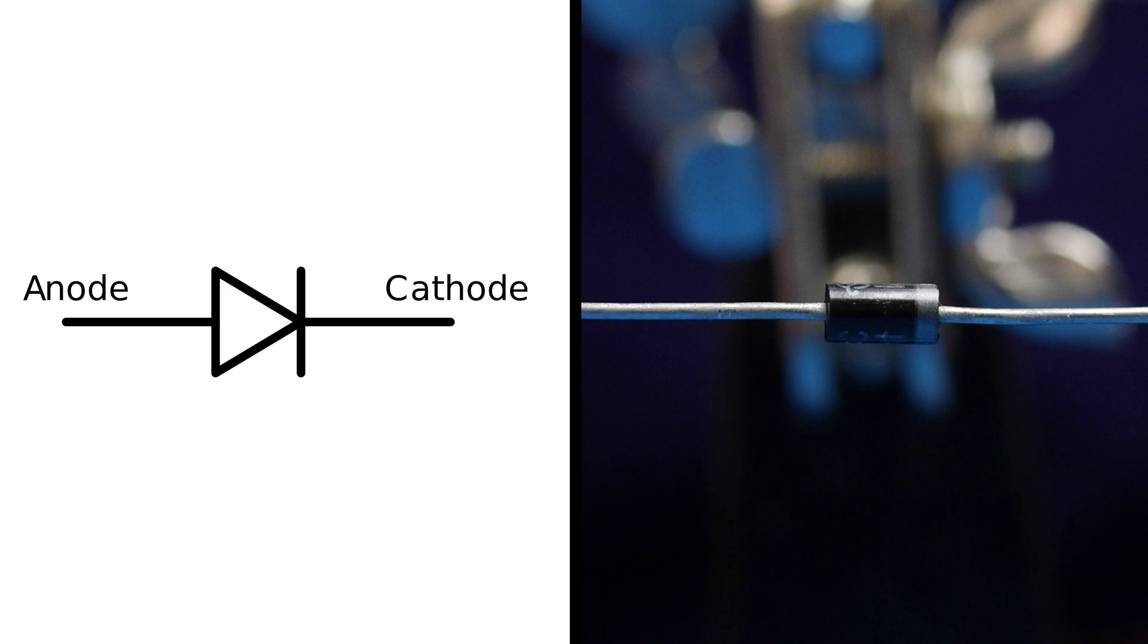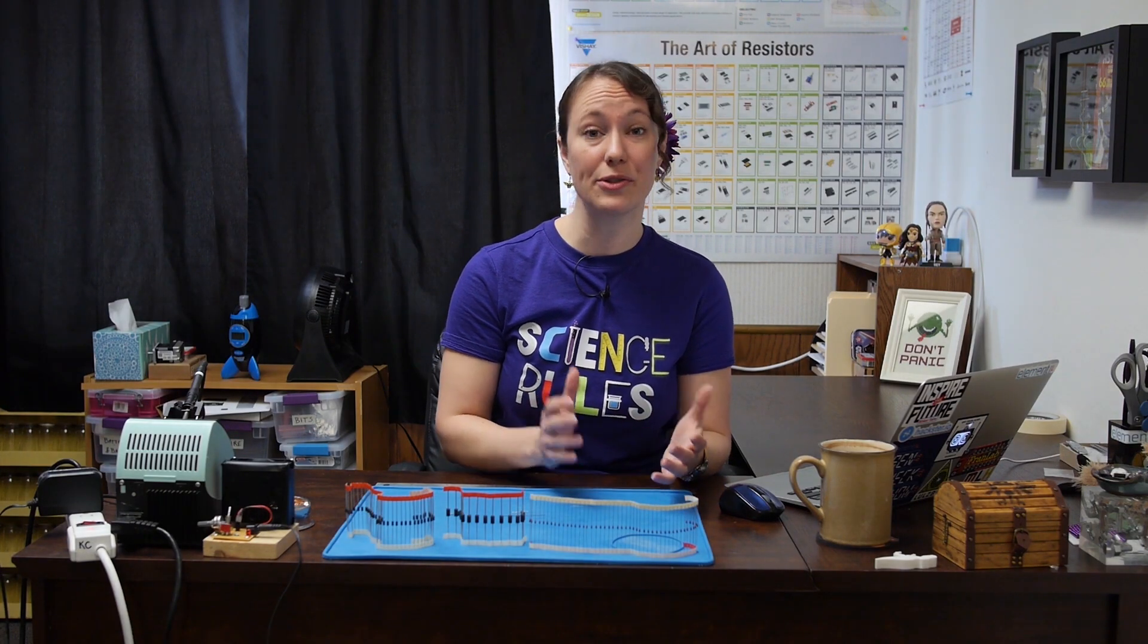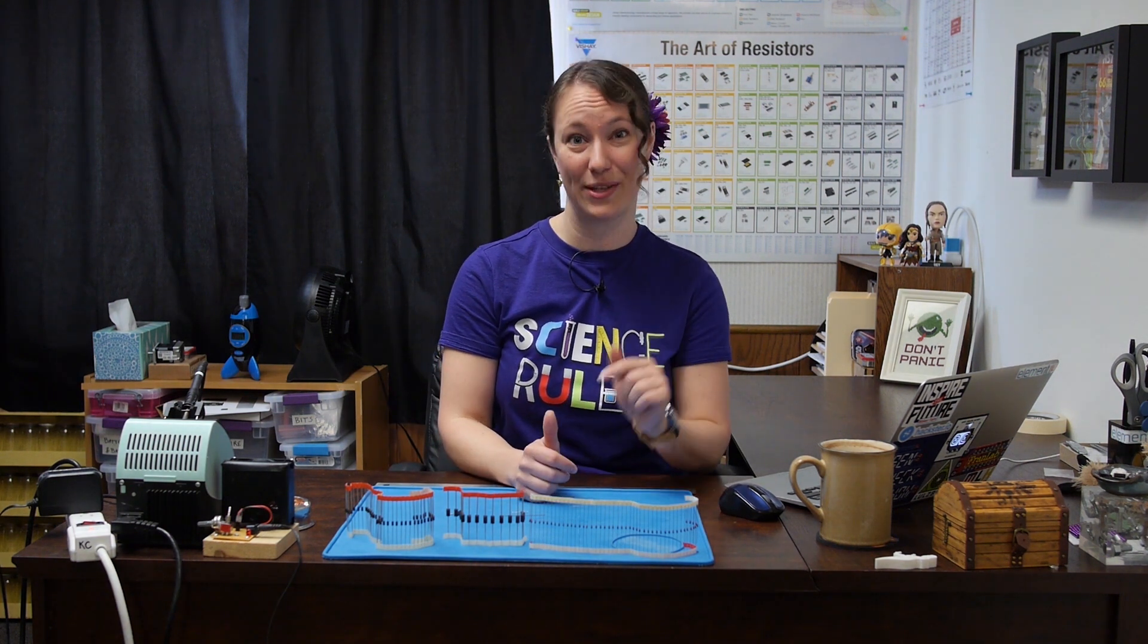This helps you make sure the diode gets put into the circuit the right way. A diode is an electrical component that allows current to flow in one direction, but not the other. Let's take a look at the inner workings of a diode to understand how this works.